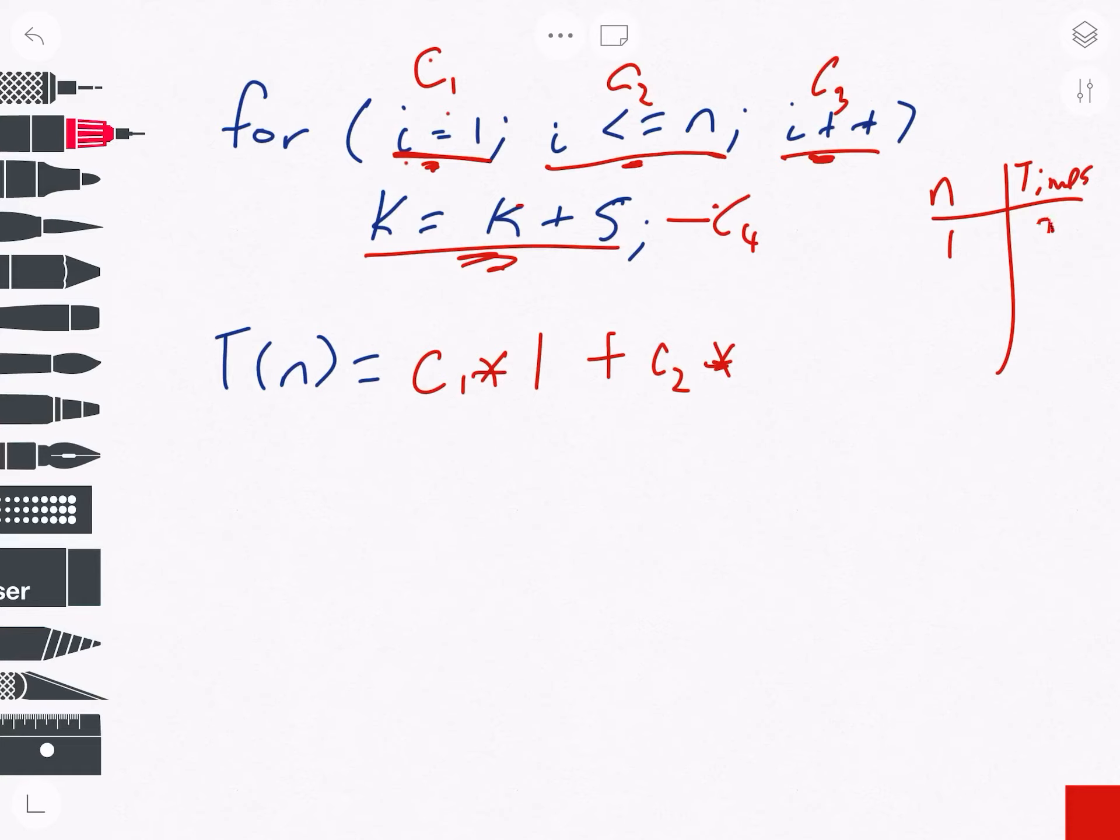Then, what about if n was zero? If n was zero, we check one is less than or equal to zero—we don't do the loop, but we did do the check. So we did the check one time. Do you see the trend here? For every n, the number of times we did the C2 task was n plus one.